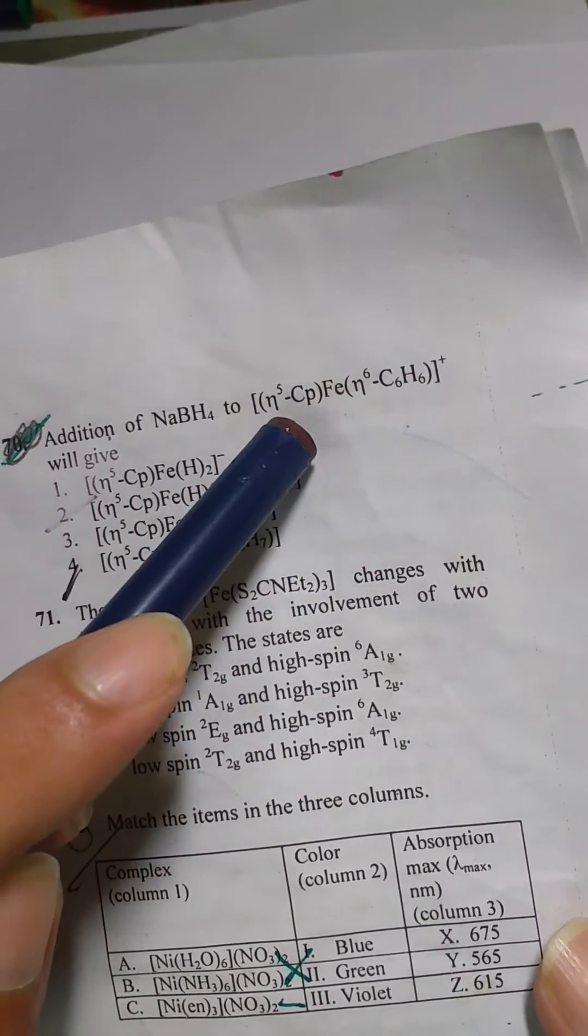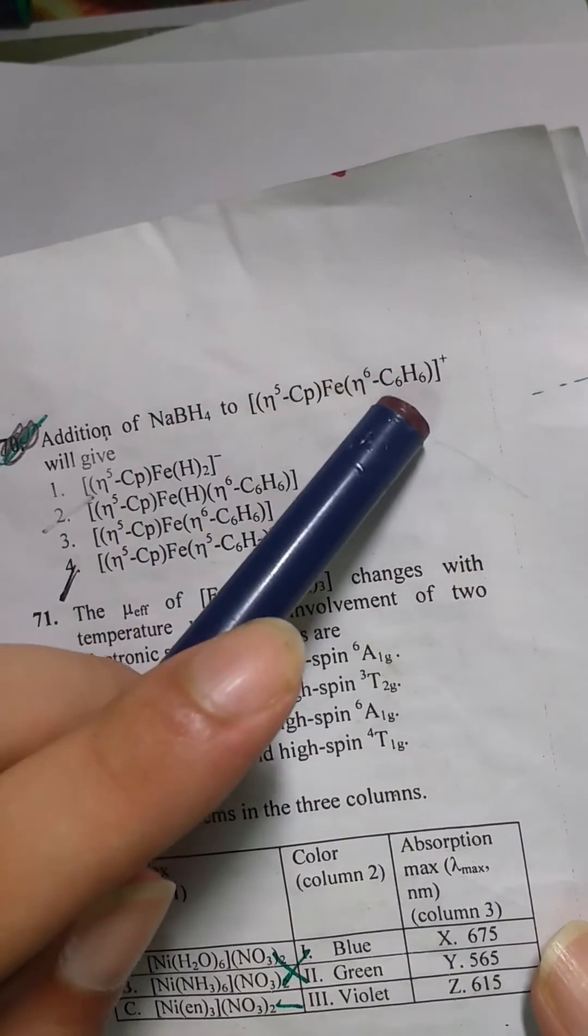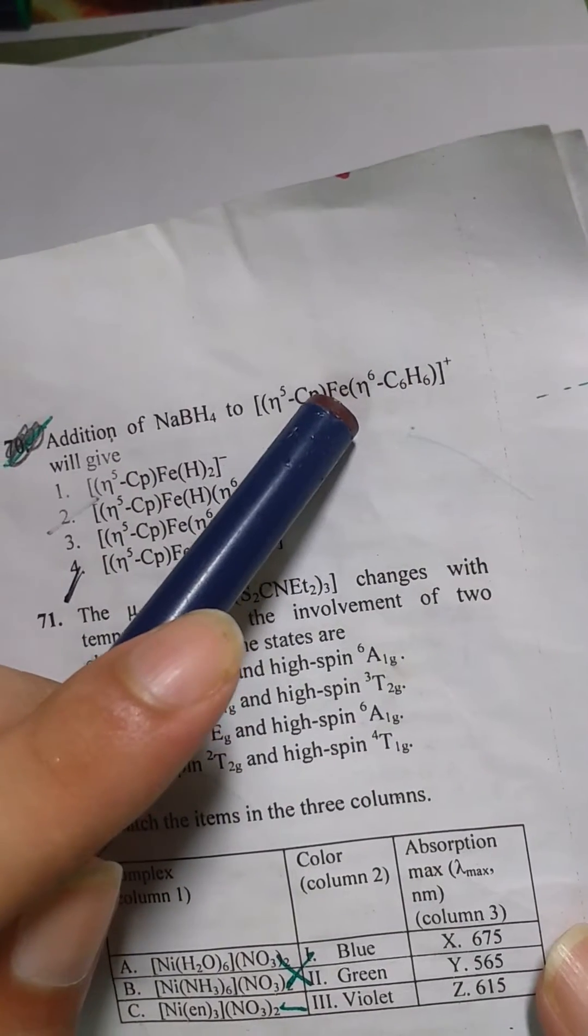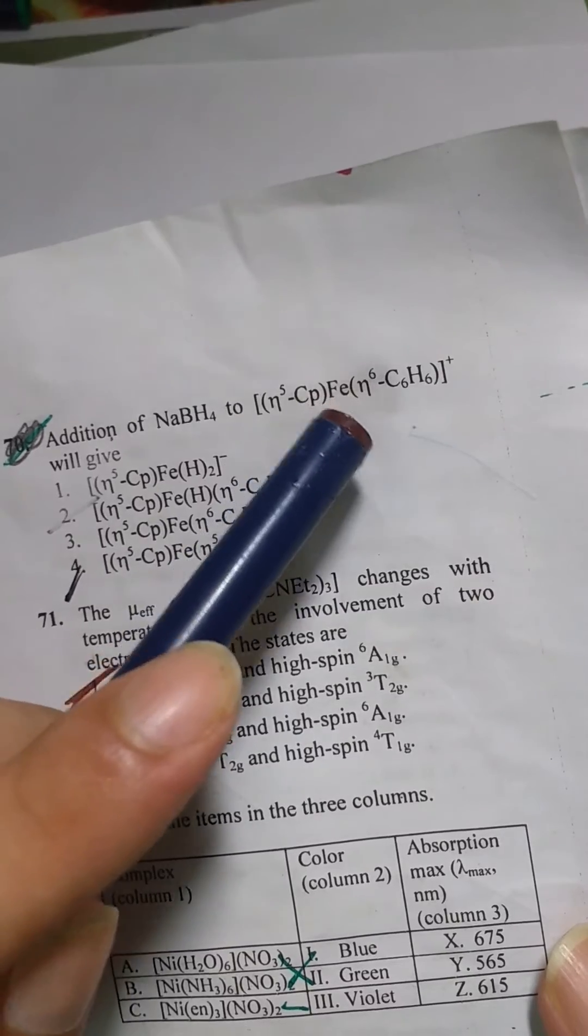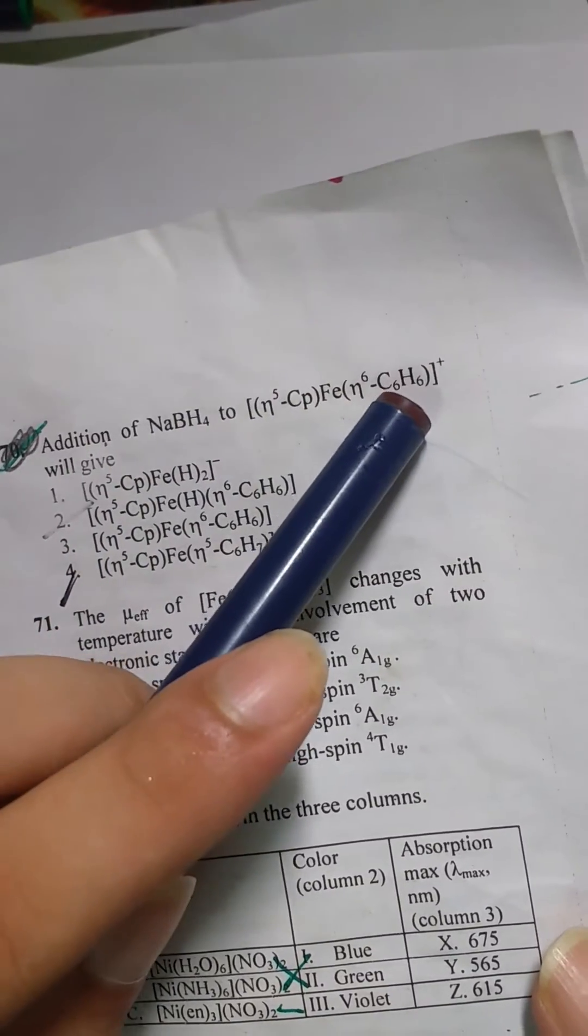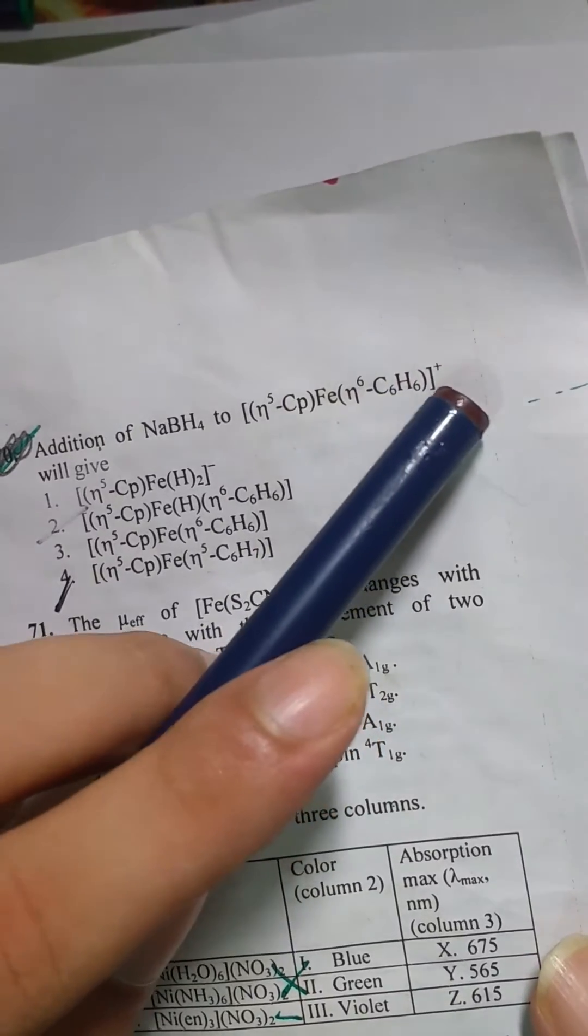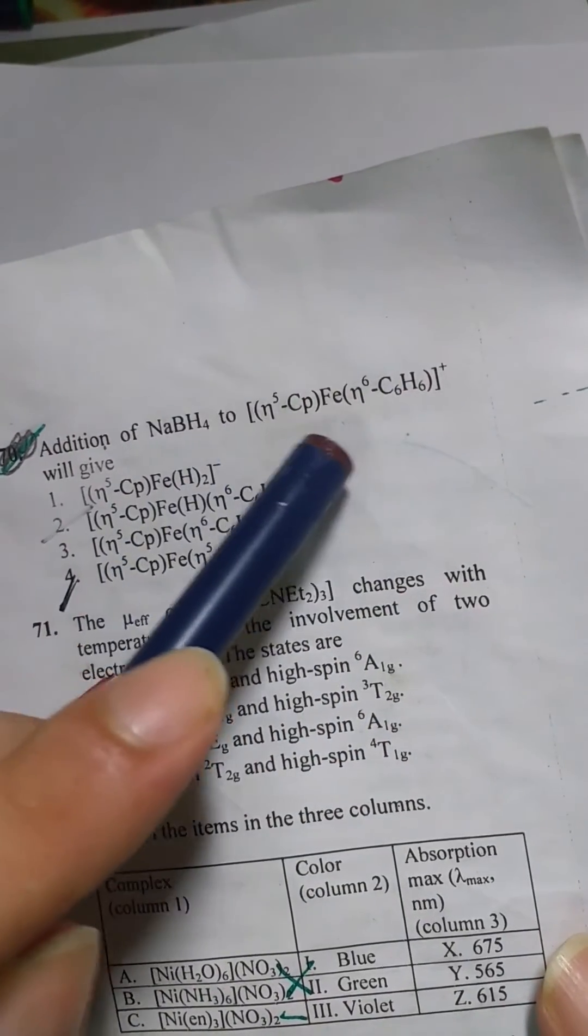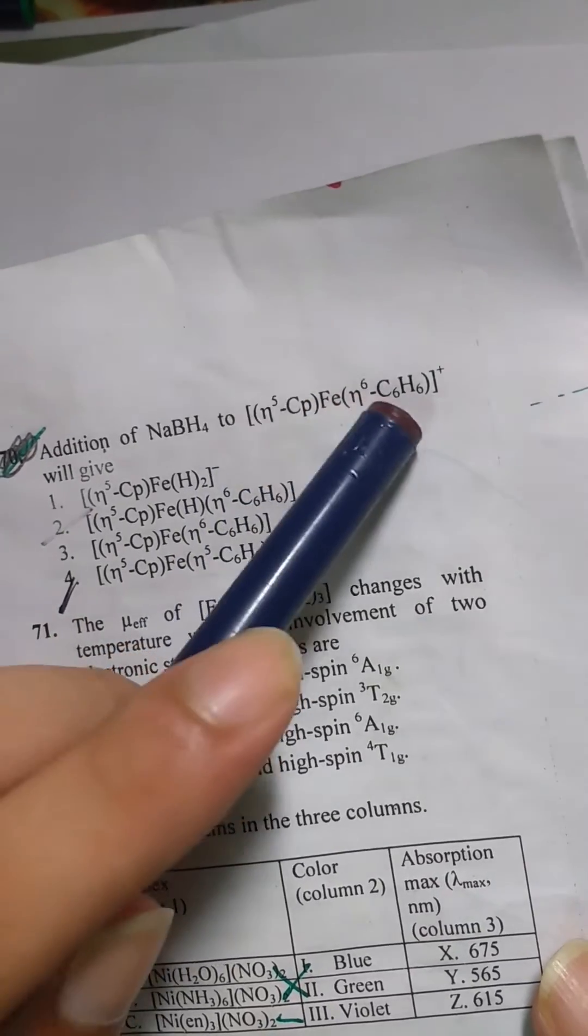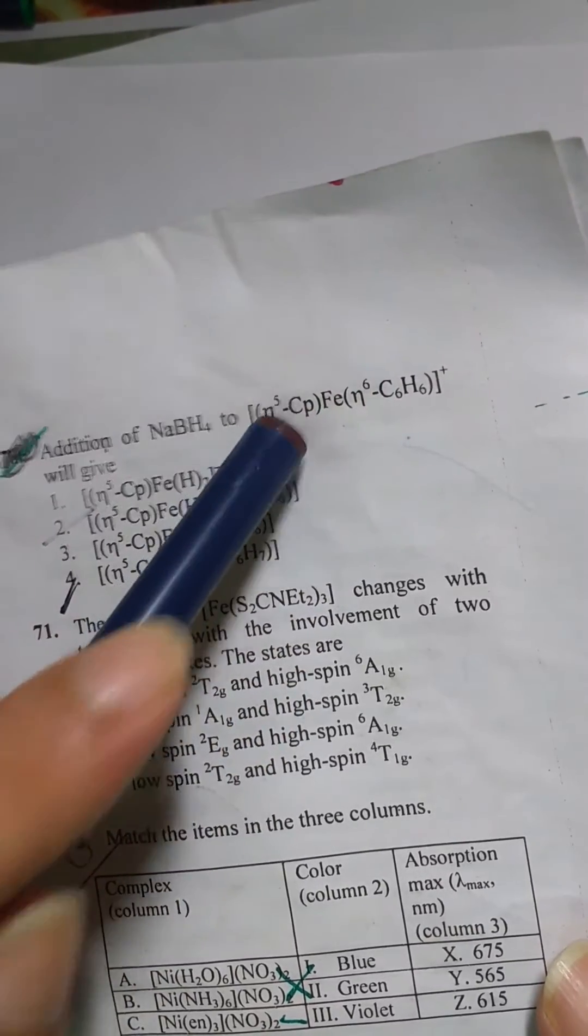So we have 5 electrons from this, 6 electrons from this so 11 plus iron has 8 electrons. So it's d6 4s2 right so it has 8 electrons so 8 plus 5, 13 plus 6, 19 but it has a positive charge so it is an 18 electron complex because iron is in plus 1 oxidation state so we will count only 7 electrons. So 6 plus 7, 13 plus 5, 18 electrons.